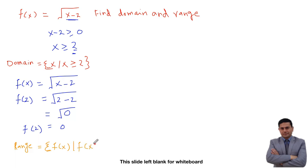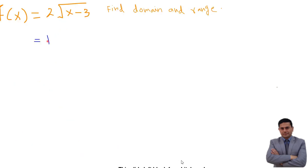Let's go to another function. x minus 3 inside the root, we will make it greater than or equal to 0. Shift 3 to the other side, it will be positive 3.